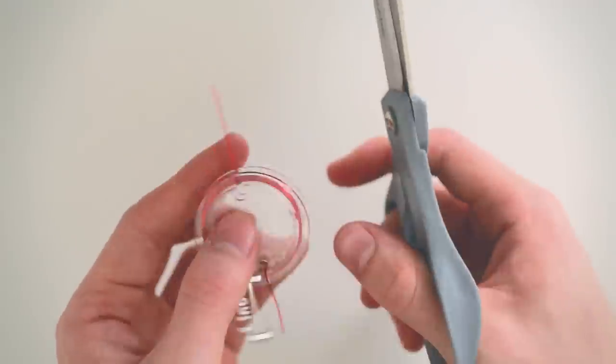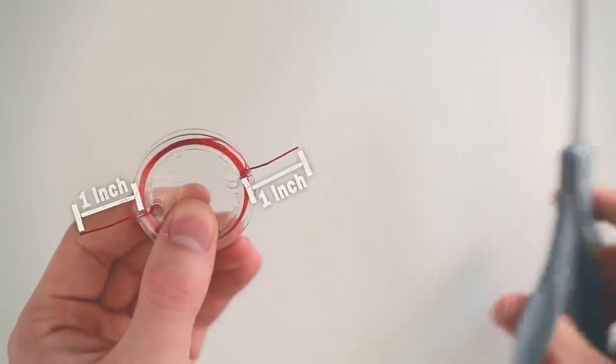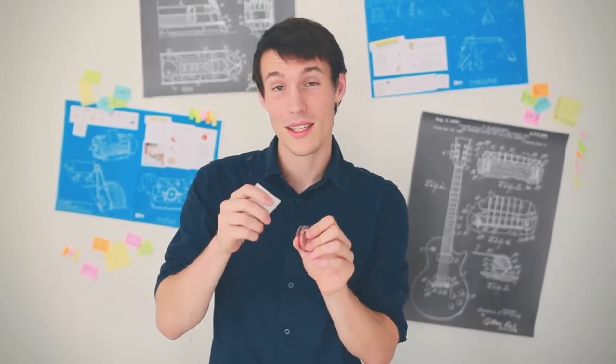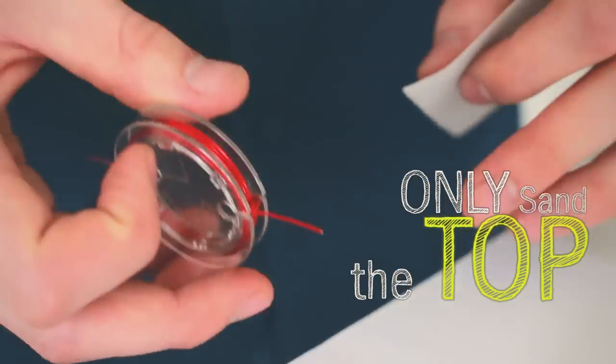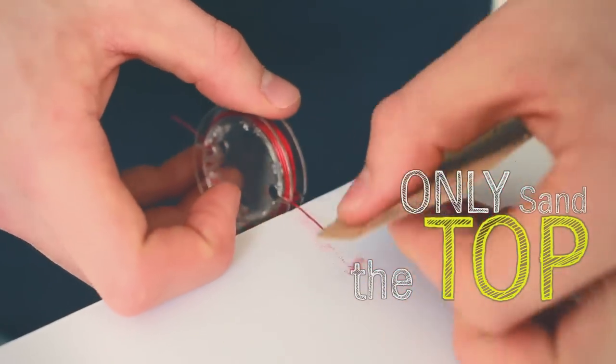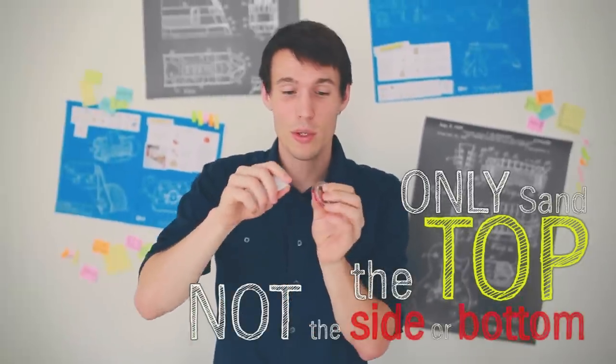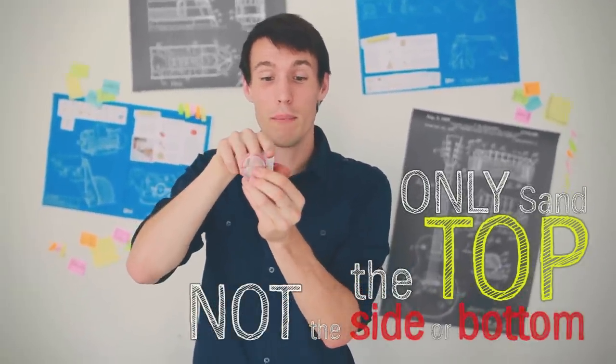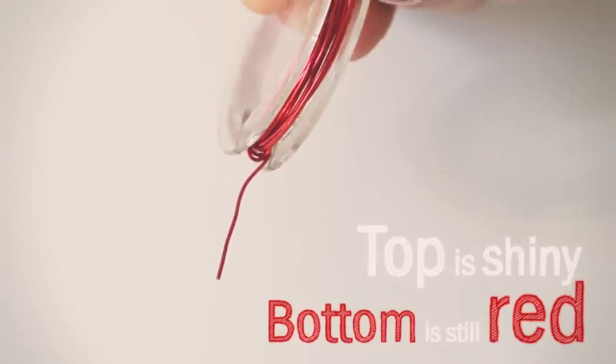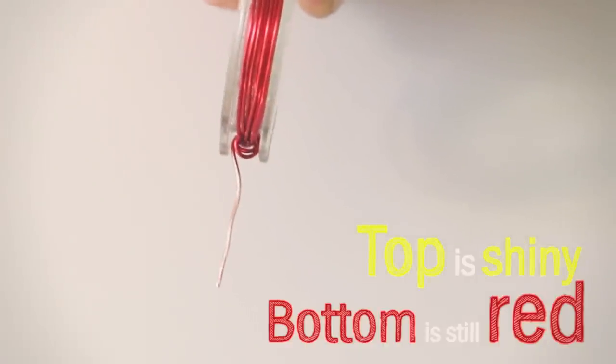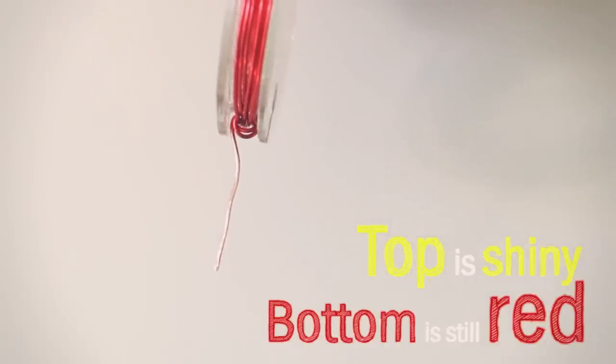Then take your scissors and snip the ends so they're about one inch long. Finally we're going to sand off the coating. Now this part is very important. You want to make sure you're sanding the top of the wire only, not the side. And you want to make sure you're sanding the top on both sides. When you're done sanding, there's no red left on the top of your wire. It should be completely copper colored.